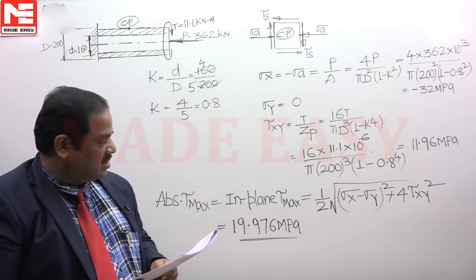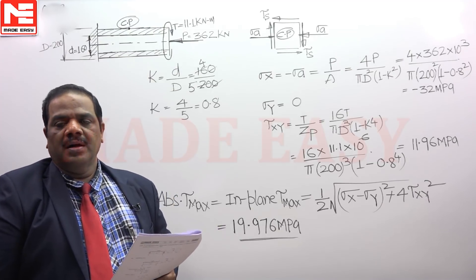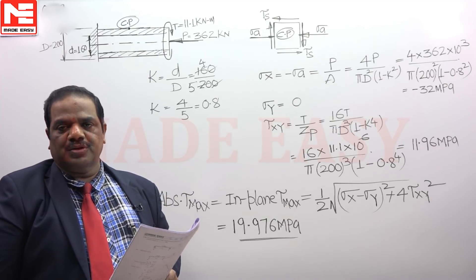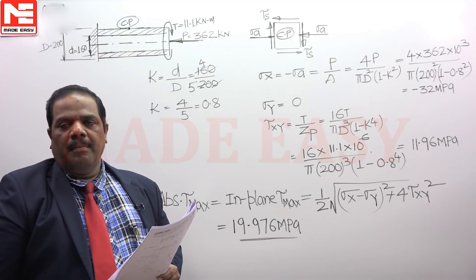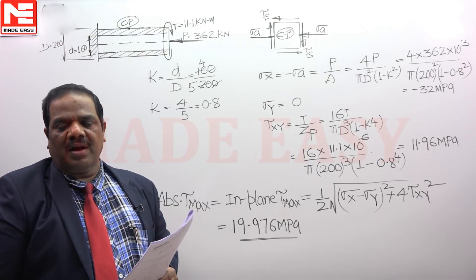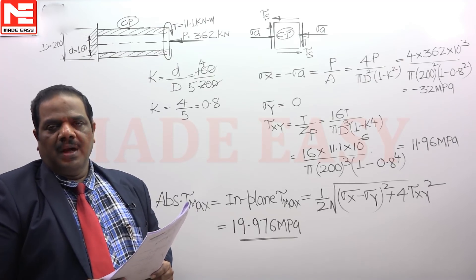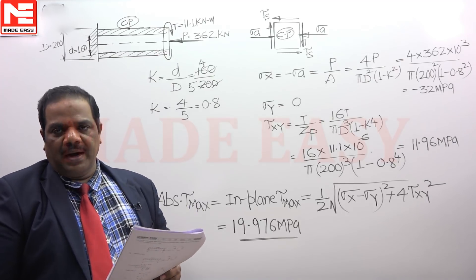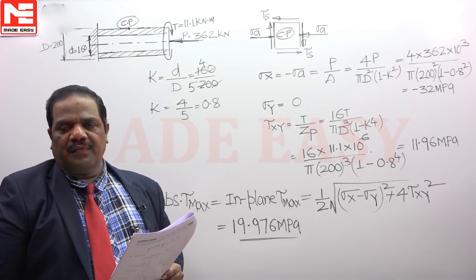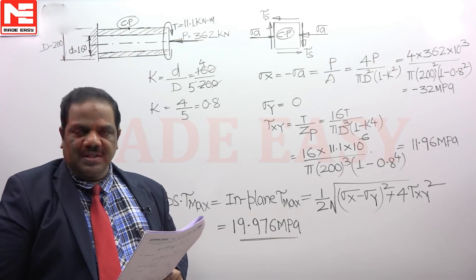The maximum shear stress induced in the shaft is 19.976 MPa. Whenever you are asked to find the maximum shear stress in a member, you should consider the absolute tau max. Hence, absolute tau max equals in-plane tau max, given by the radius of the Mohr's circle — this point should be noted. For this question, the answer is 19.976 MPa.